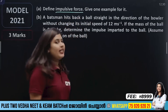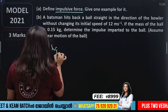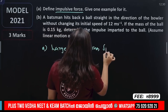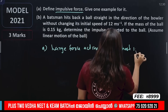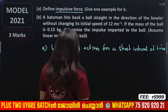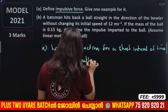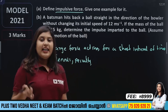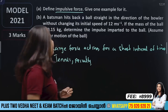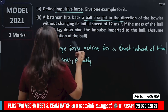Define impulsive force: it is a large force acting for a short interval of time. Examples include a penalty kick or a free kick in football. Now: a batsman hits a ball straight in the direction of the bowler without changing its initial speed.